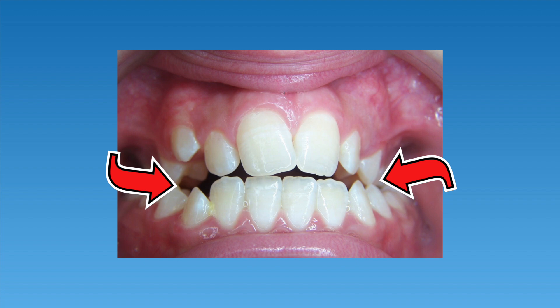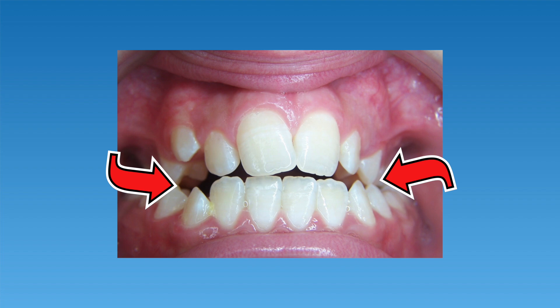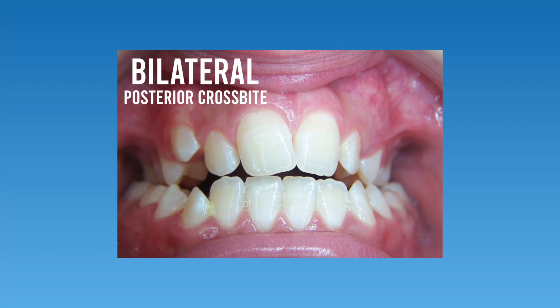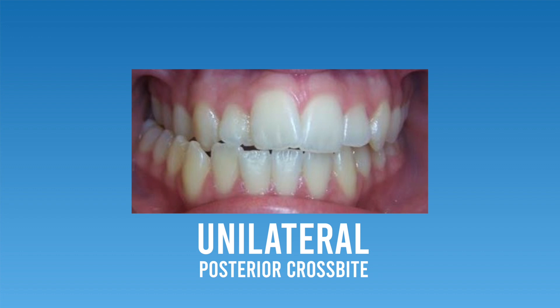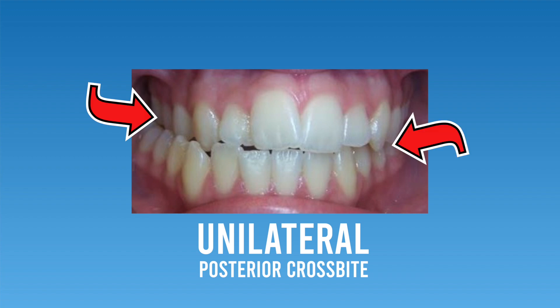In this picture, both sides of the upper arch fit inside of the bottom teeth, and this is called a bilateral posterior crossbite because it occurs on both sides. Another type of posterior crossbite is when just one side of the upper arch falls inside of the lower teeth. This is called a unilateral posterior crossbite, and you can see that the teeth on the right side sit entirely inside of the lower arch.